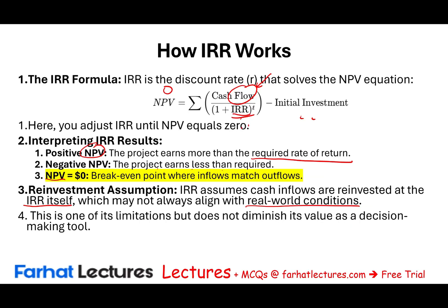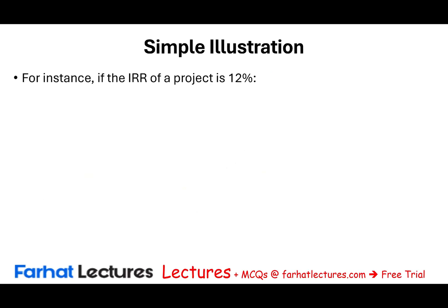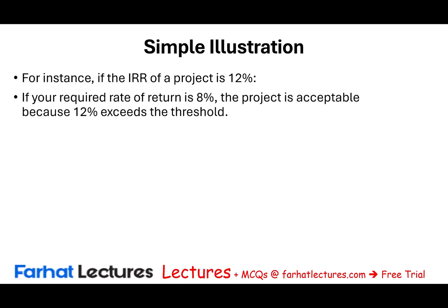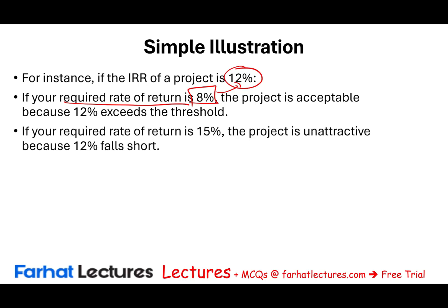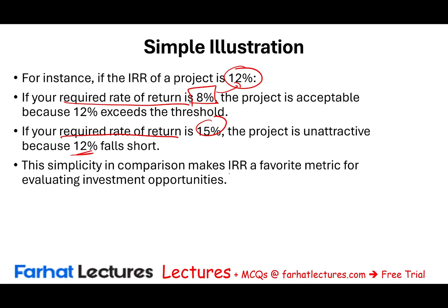For example, if the IRR of a project is 12% and the required rate of return for a company is 8%, we accept the project because the company wants to earn 8% and this project earns 12%. If the required rate of return is 15% and the IRR is 12%, we don't accept. This simplicity in comparison is what makes IRR a favorite metric for evaluating investment projects.